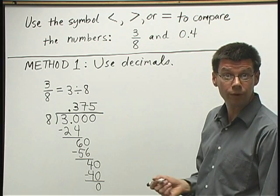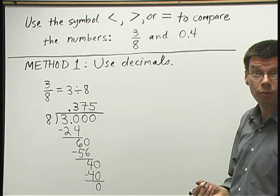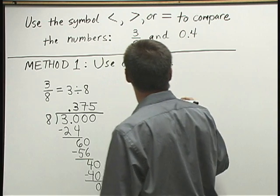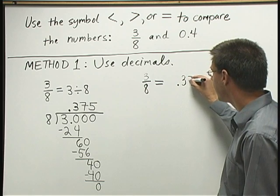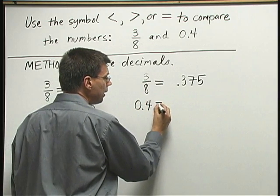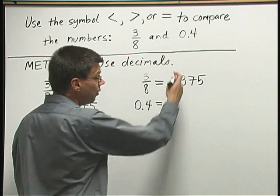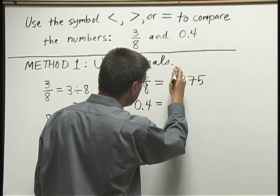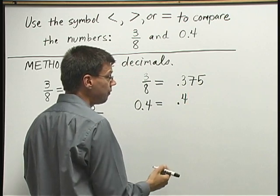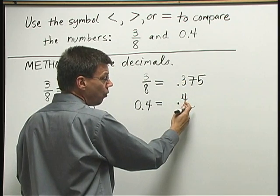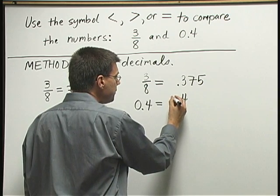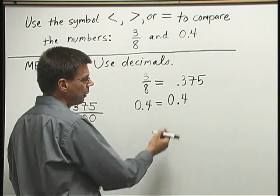Now, let's compare the decimal for 3 eighths to the decimal we already had for 0.4. 3 eighths is 0.375. And 0.4, I'm just going to recopy. I want to write both of these decimals with the decimal point lining up. So the decimal point for 0.4, I want right below the decimal point for 0.375. And I want the 4 to the right of the decimal, right below the 3 to the right of the decimal in 3 eighths. The 0 in 0.4 goes in front.